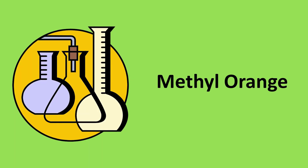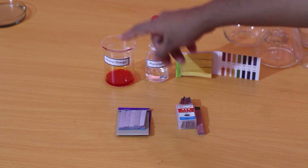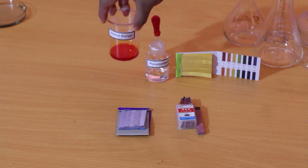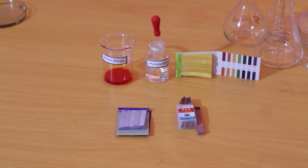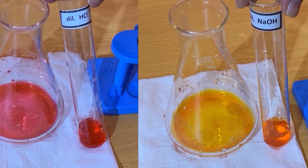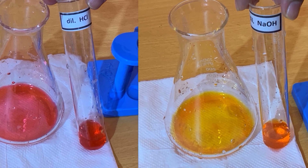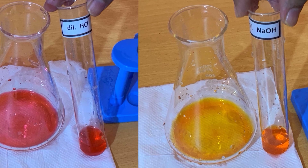Next, we are going to differentiate an acid solution and a basic solution by using the indicator methyl orange. Methyl orange, as the name implies, is an orange color solution. Methyl orange turns into yellow in sodium hydroxide solution, and the indicator turns red in an acidic solution.